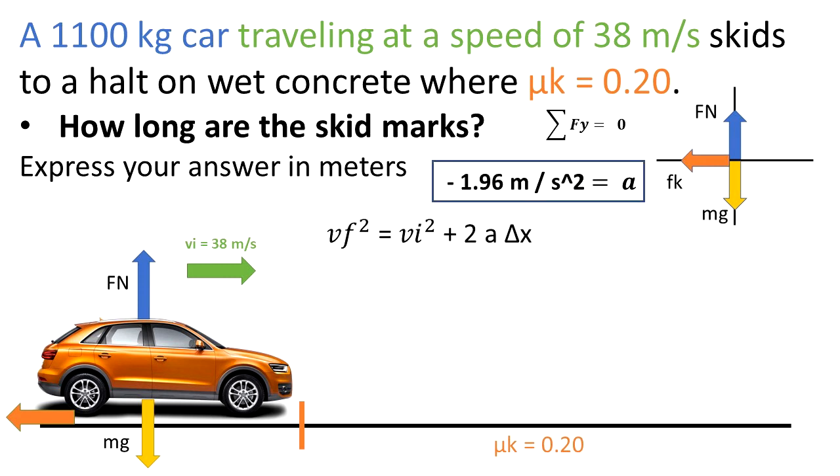Let me move the result for acceleration upwards and let's apply kinematic equation. And we have that final velocity squared is equal to initial velocity squared plus 2 times the acceleration multiplied by Δx. Δx represents the length of the skid in meters. We know that final velocity is 0 because we want the car to stop completely. The initial velocity was in the givens. It is 38 meters per second.